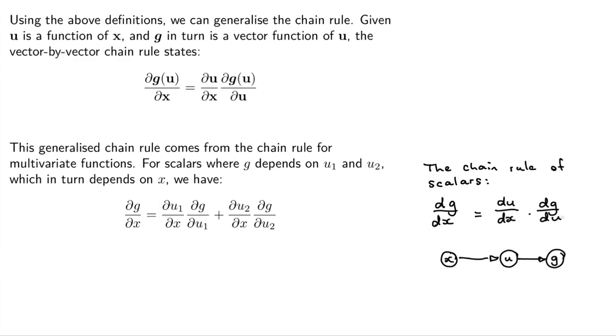And what the chain rule of scalars tells us is, well, we want to know if I wiggle x, what's the influence on g? You can do that by checking if I wiggle x, how much does u wiggle, and then basically multiplying that with a wiggle of u with respect to g. Maybe I'm saying wiggle too much, but you probably get the point.